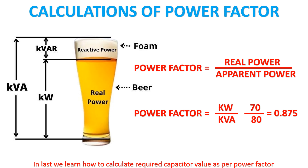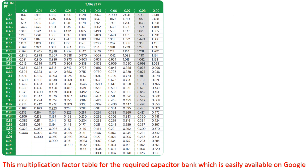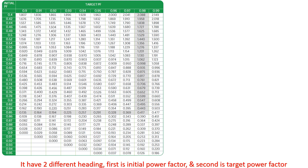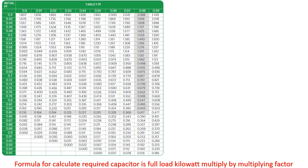Next we learn how to calculate the required capacitor value as per power factor. This is a multiplication factor table for the required capacitor bank, which is easily available on Google. It has two different headings: first is initial power factor, and second is target power factor. The formula to calculate the required capacitor is full load kilowatt multiplied by the multiplying factor.